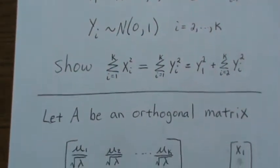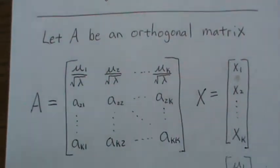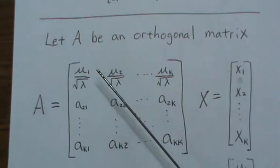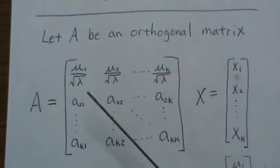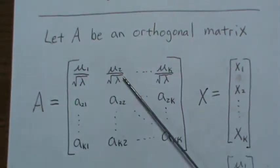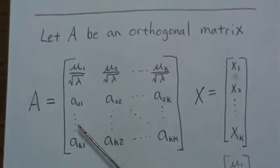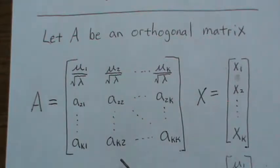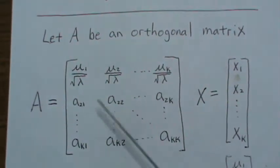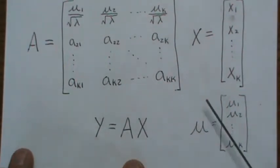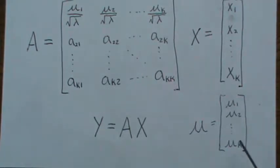Let's define A to be a specific orthogonal matrix. The first row of A is: μ1/√λ, μ2/√λ, ..., μk/√λ, where λ is defined to be the sum of the μi-squares. The specific values of the remaining rows aren't needed in this result, but we do need the fact that A is orthogonal — meaning any two rows multiplied together give zero.